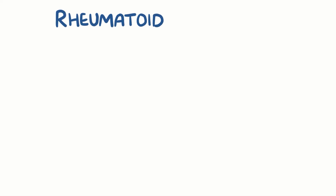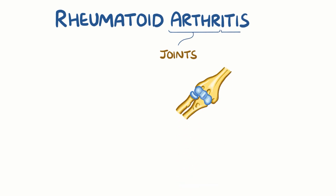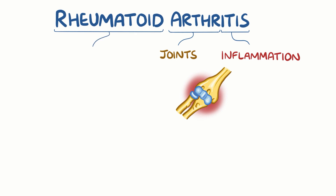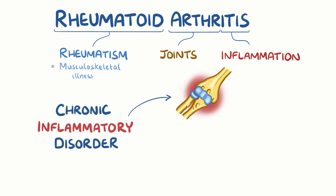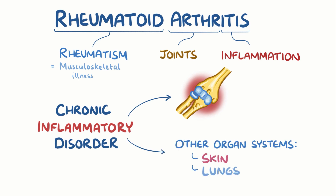In rheumatoid arthritis, 'arth' refers to joints, 'itis' means inflammation, and 'rheumatoid' comes from rheumatism, which more broadly refers to a musculoskeletal illness. So rheumatoid arthritis is a chronic inflammatory disorder that mostly affects the joints, but can also involve other organ systems like the skin and the lungs as well.